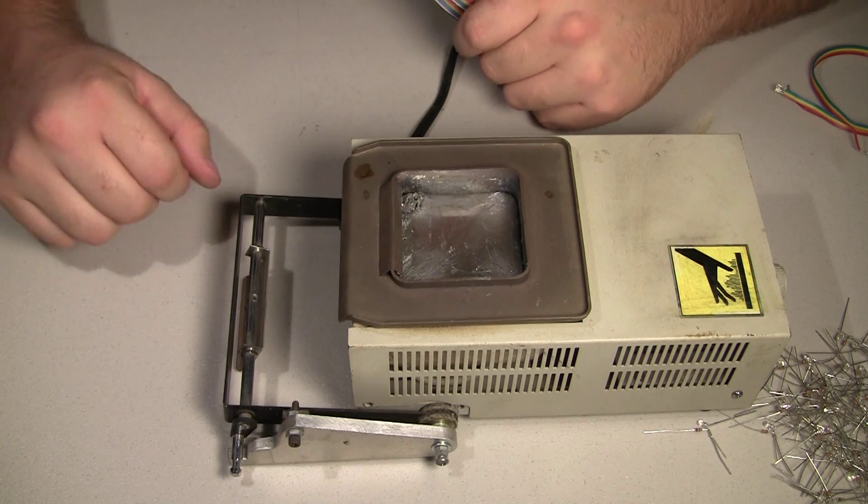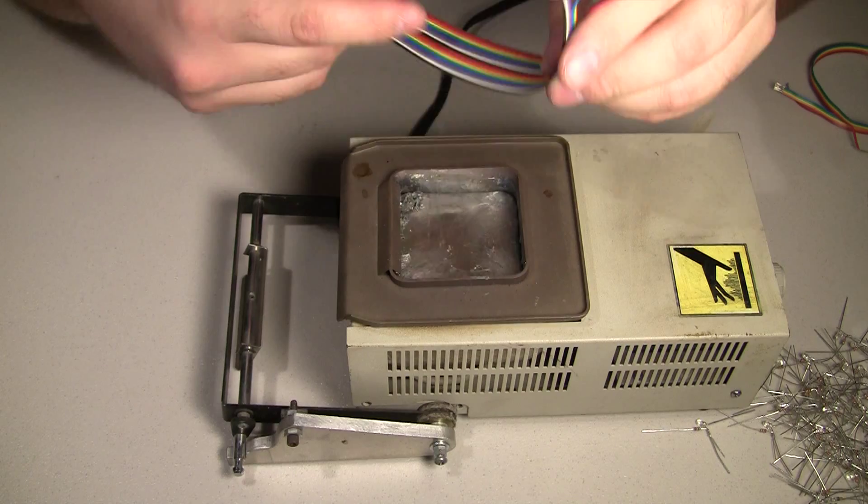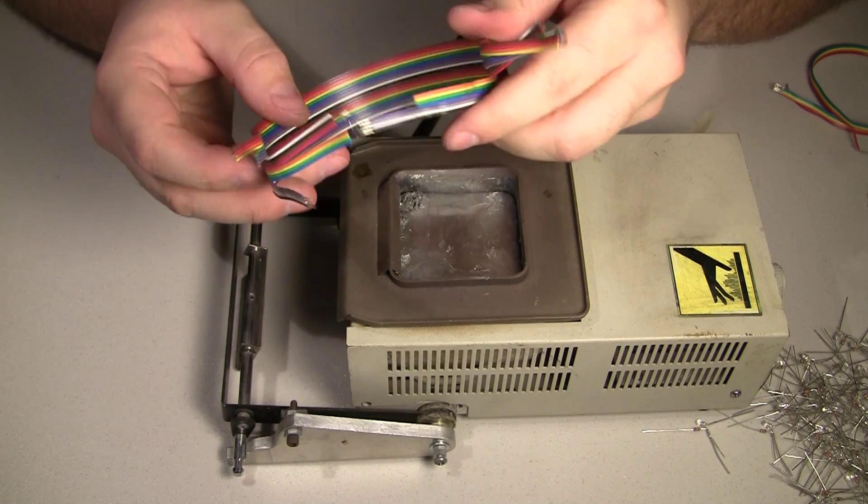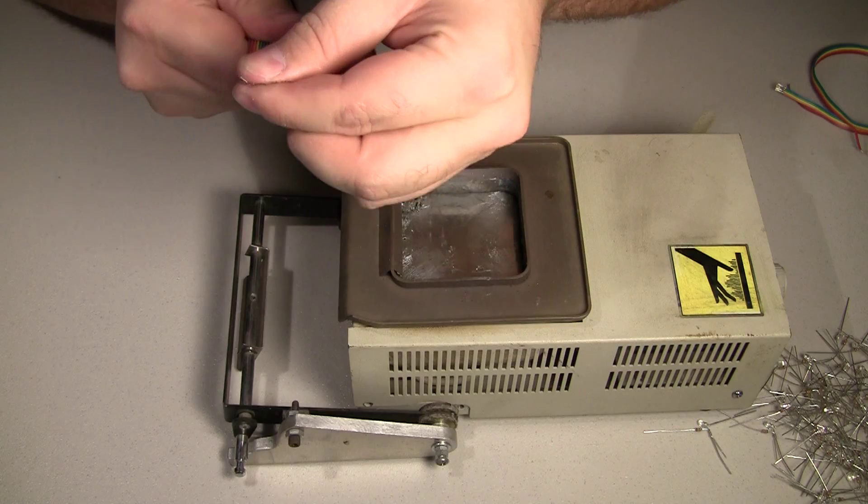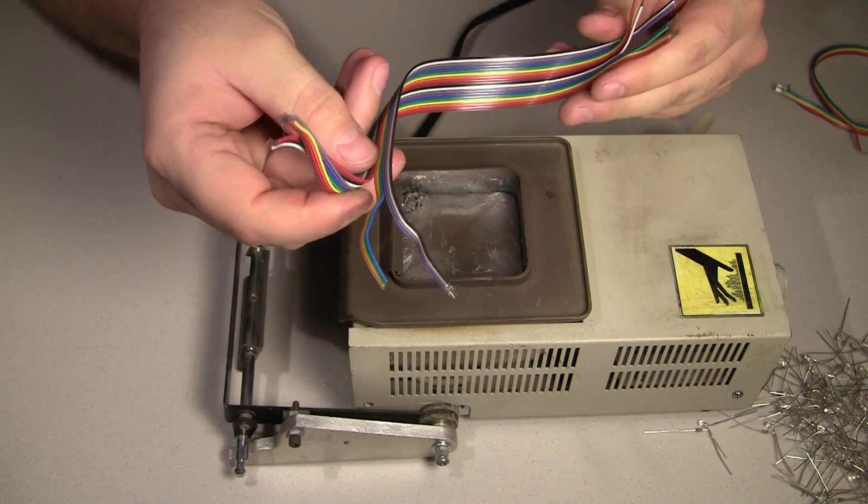Okay, the solder pot's been on long enough and it's actually fully melted. And all the ribbon cable that I just stripped, I'm going to go ahead and just tin all the leads on one end and then the other end will be for the LEDs.